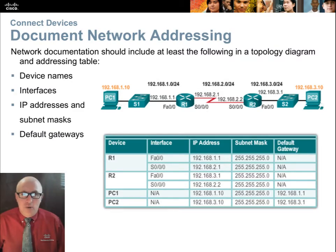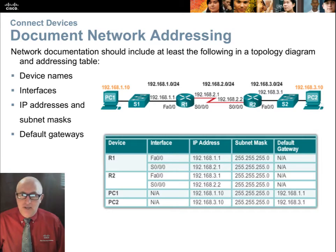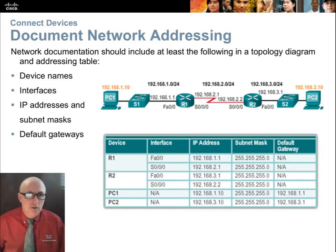You'll want to document the network addressing before you ever start configuring the router. You need to know all the IP addressing for the entire network, as shown in this table. Notice that routers do not have default gateways because they are the gateways — they are the default gateway. You'll want to track device names, the interfaces on the device being used, the IP addresses and subnet masks, and then the default gateways.